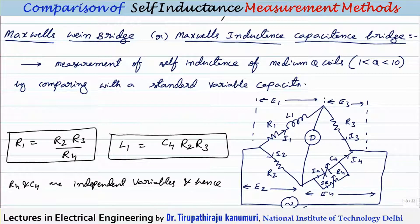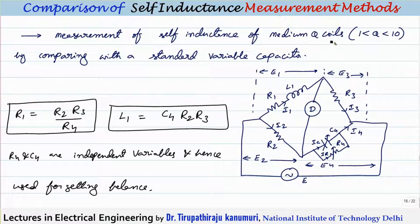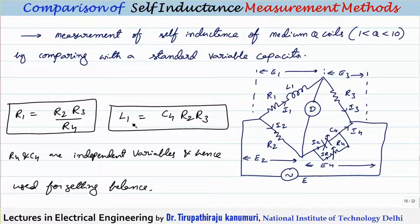In practice, we use the Maxwell Wien bridge, also called the Maxwell's inductance capacitance bridge — named because inductance is measured in terms of capacitance. It is particularly useful for measuring Q values between 1 to 10. Here a variable capacitor is connected in parallel with a variable resistor. Using Z1Z4 = Z2Z3, we get R1 = R2R3/R4 and L1 = C4 × R2 × R3.